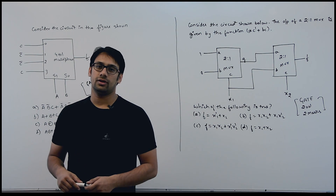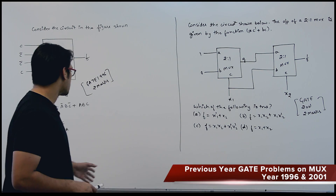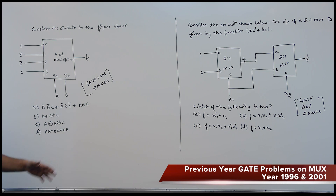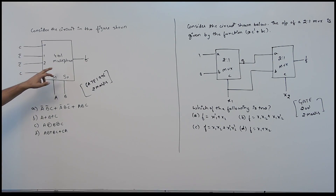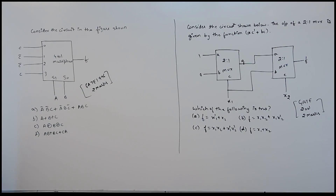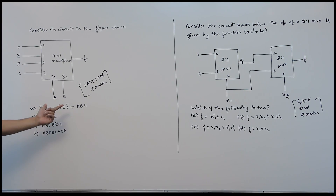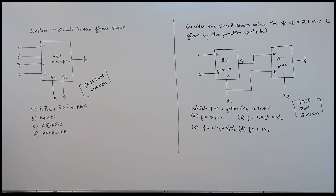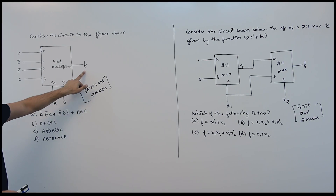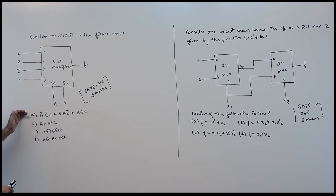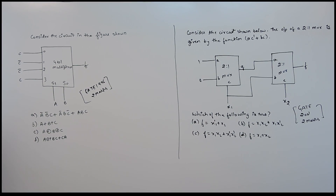Consider these two questions. This is the first question, asked in GATE 1996, and the second question is asked in GATE 2001. The first question says: consider the circuit shown below. This circuit is using a 4×1 multiplexer. We are having some inputs and select lines. They are asking what function f is representing, and you can check from the options below.